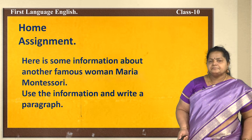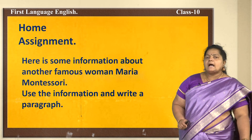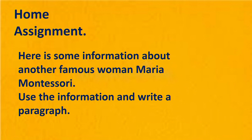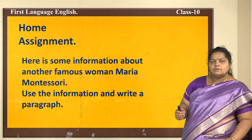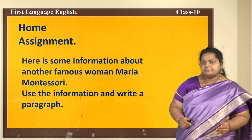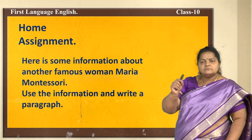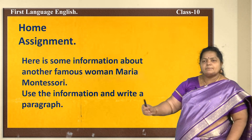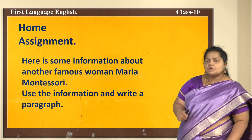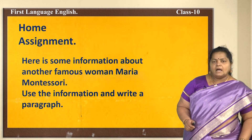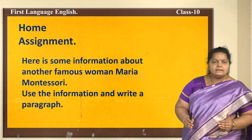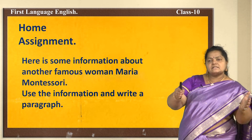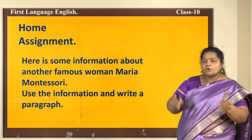Home assignment for today: here is some information about another famous woman, Maria Montessori. Use the information and write a paragraph. When information is given point-wise — date of birth, place, parents' names — your duty is to make it into a paragraph. This is also a kind of collocating sentences — making sentences into a useful paragraph, seeing what goes with what.